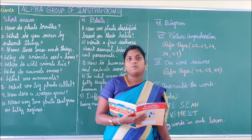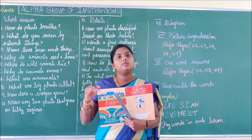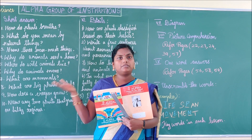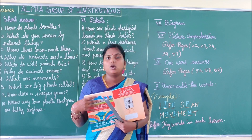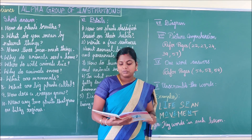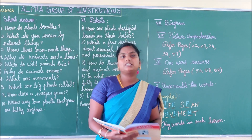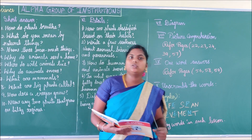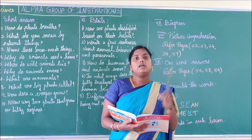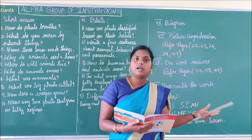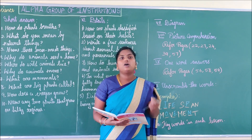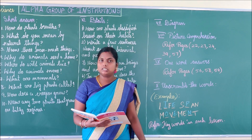Continuing differences: All living things grow over time; non-living things do not grow. Living things reproduce — they give birth to young ones, or eggs hatch into new ones; non-living things do not reproduce. Living things can feel emotions and changes; non-living things cannot feel.